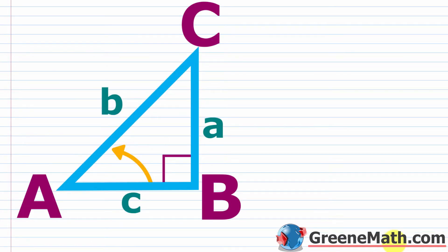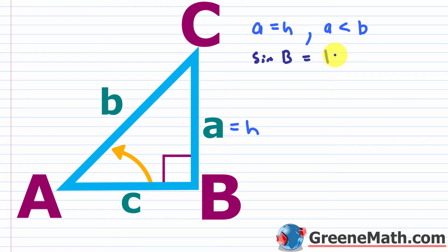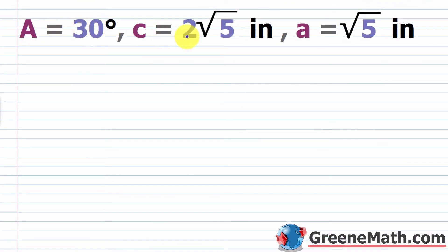The second scenario is where we end up with exactly one right triangle. Here, the value of a is exactly equal to H. If a equals H and a is less than b, then we have a right triangle. Another check: the sine of angle B will equal 1, confirming it's 90 degrees.